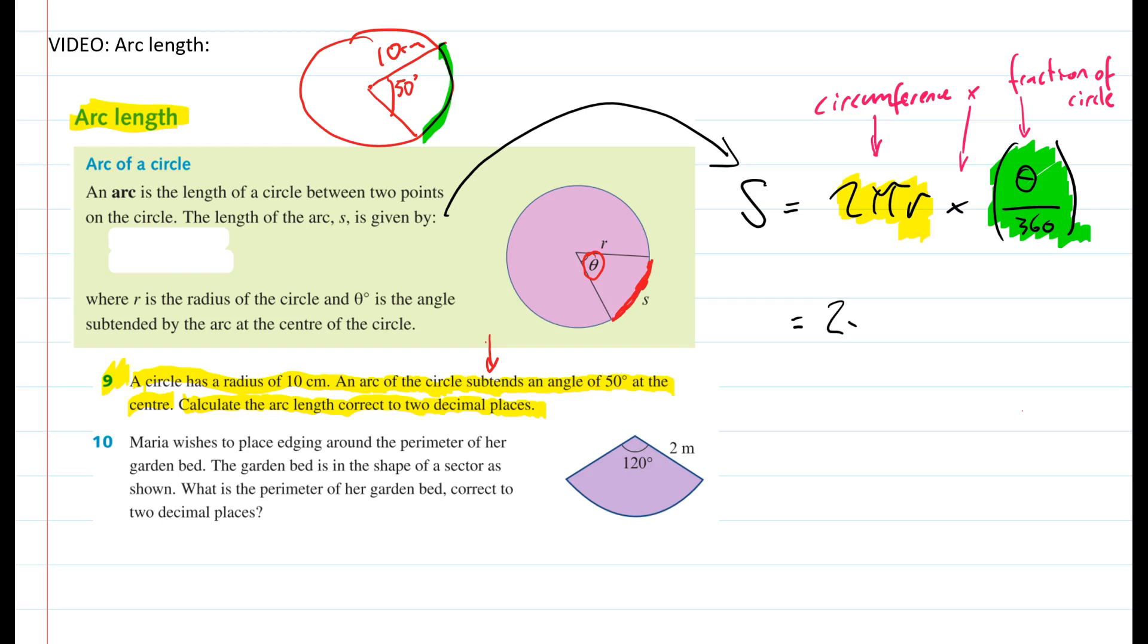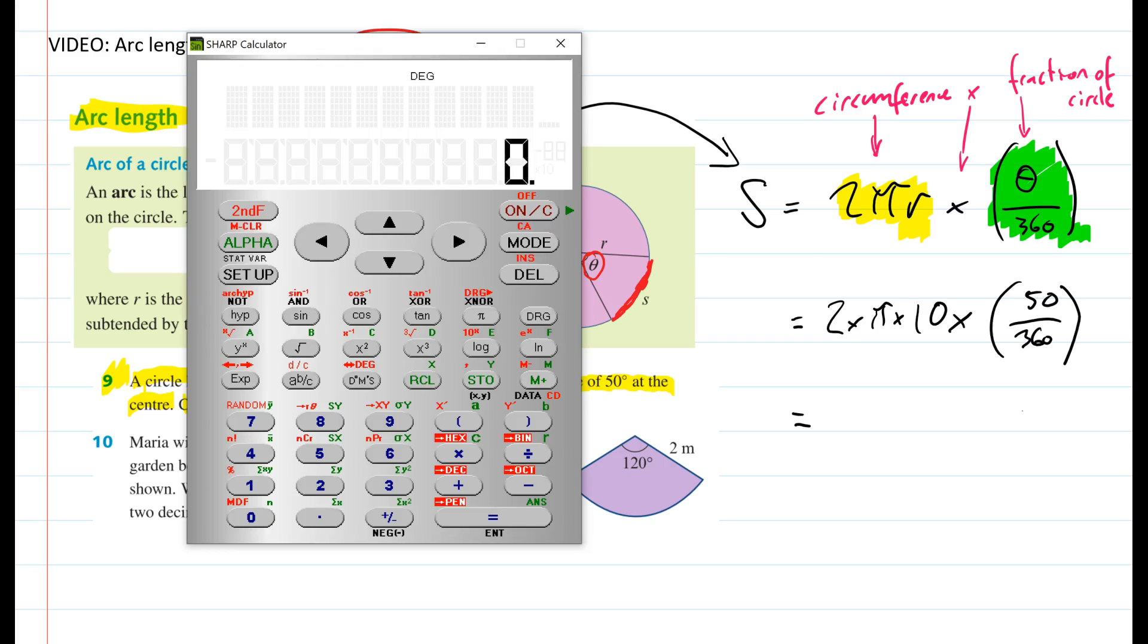Let's plug it in. We've got 2 times pi times 10 for the radius, multiplied by our angle 50 out of 360. I'm going to go plug it in.